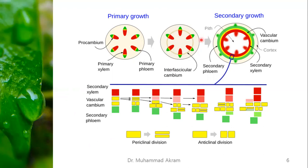With further maturity of the vascular cambium, it produces a complete cylinder of vascular cambium between the xylem and the phloem.